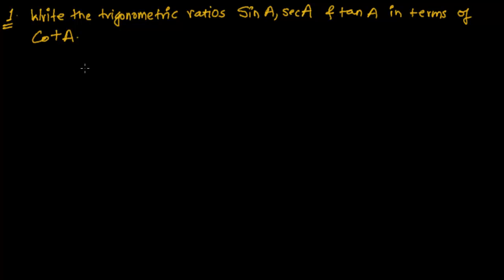Hi friends, this is the very first problem of the trigonometric identity. The question is saying write the trigonometric ratios sin A, sec A, tan A in terms of cot A. We have to convert sin A into cot A, sec A into cot A, and tan A into cot A.